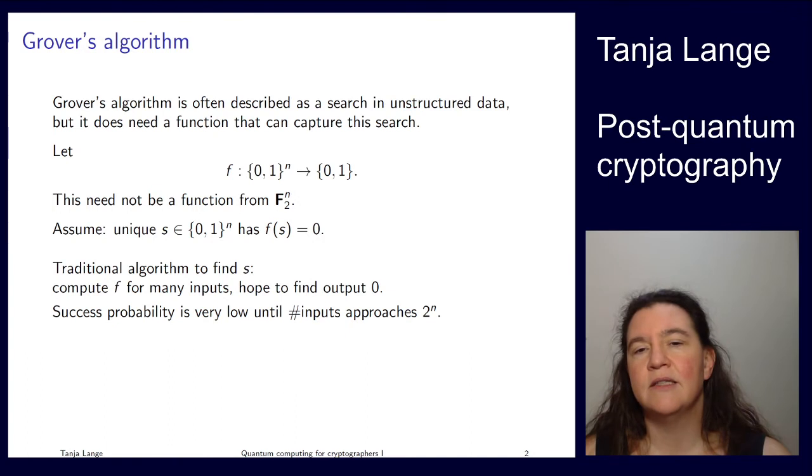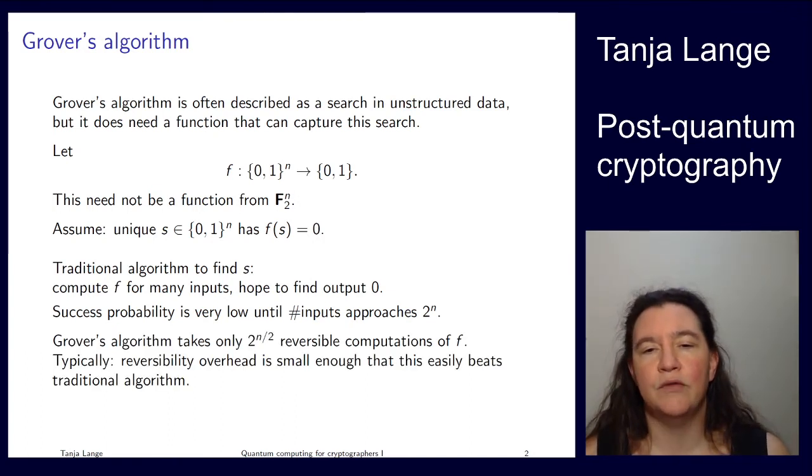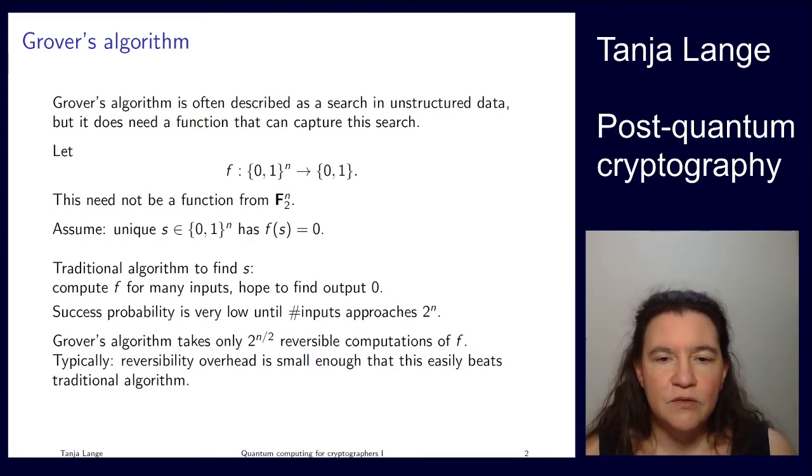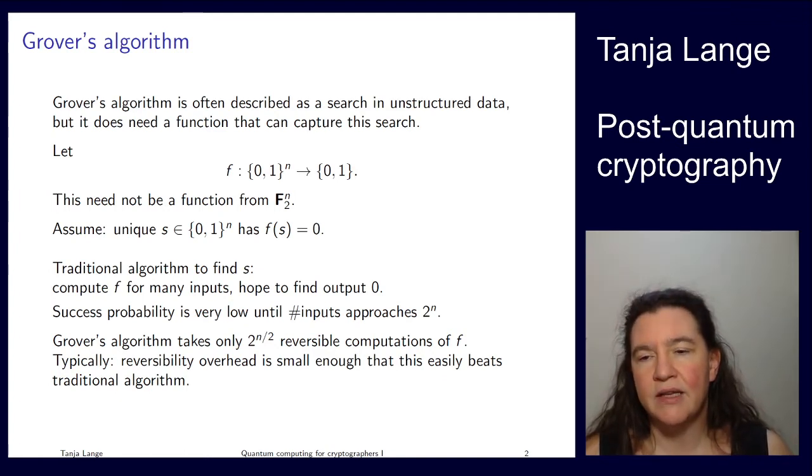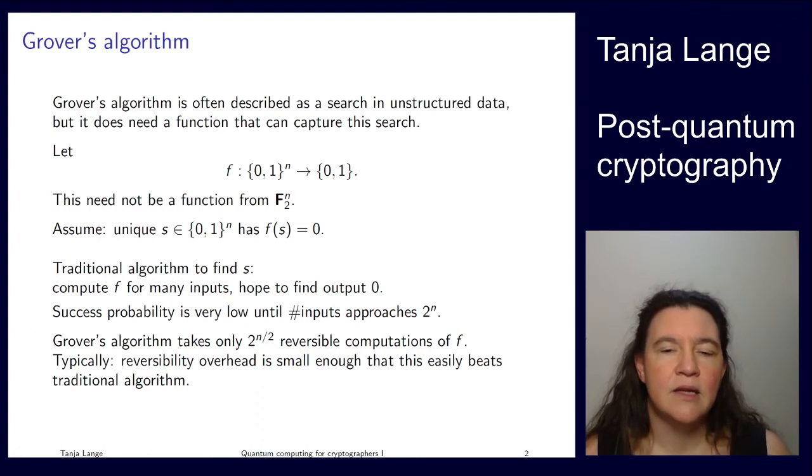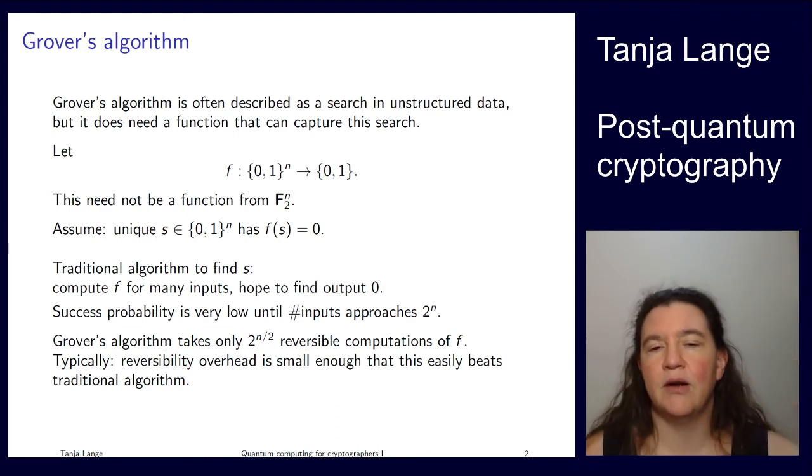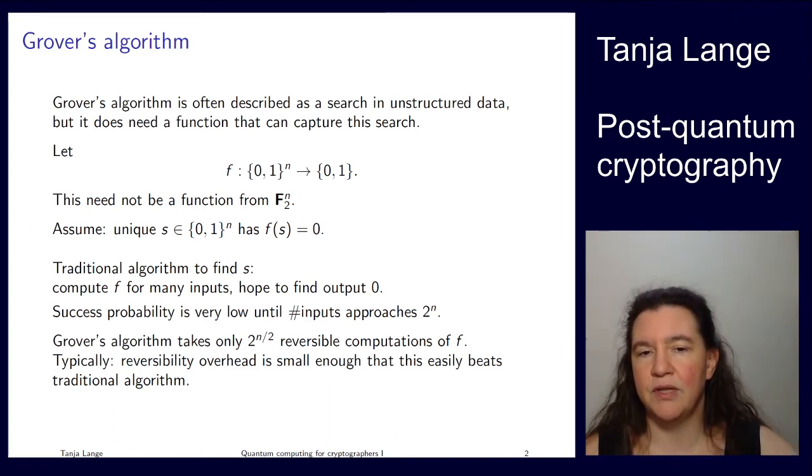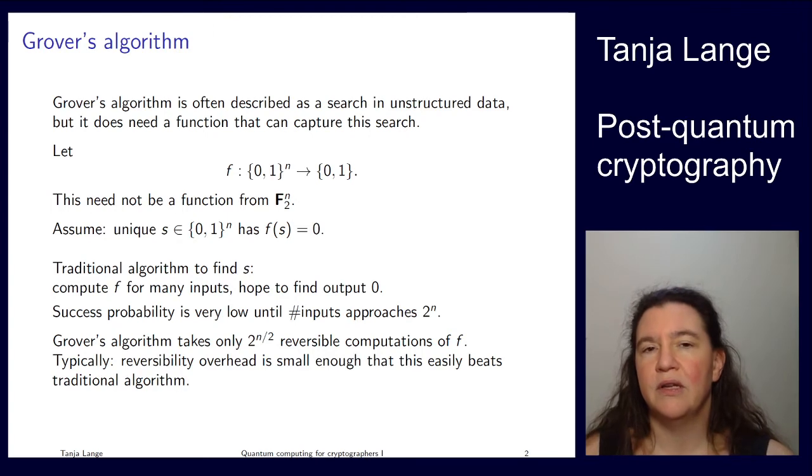What Grover does is it speeds that up to 2^(n/2) computations of f. However these are now computations on a quantum computer, so in particular these have to be reversible. So it's more expensive to do these computations. For instance, if you go back to this AES example, computing AES with a normal circuit needs fewer gates than a reversible computation of AES. And there are lots of these computations so there's a constant overhead. But it's typically smaller than the benefit of an extra factor of 2^(n/2).